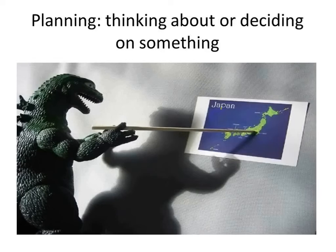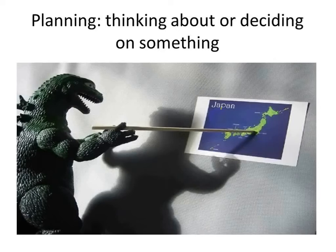What are you thinking about, grade 2? Where do you want to go on your vacation? Thinking about or deciding on something is called 'planning.' So to think about something or decide something is a plan. To think about going anywhere, or to think about doing something, or decide to do something — this is called planning.